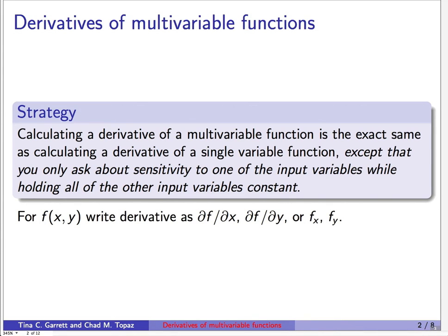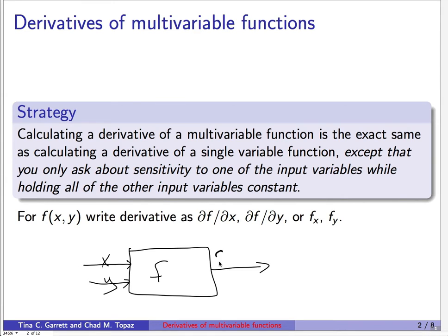Suppose we have a function that takes two inputs, x and y, and we get some output f of xy. If we want to talk about a derivative, we have two choices. We could imagine changing x a little bit and asking how the function output changes while we ignore y. Or we could ask how the function output changes if we change y while ignoring x. These are called partial derivatives.